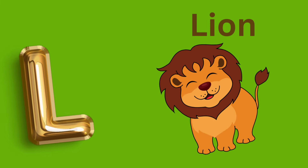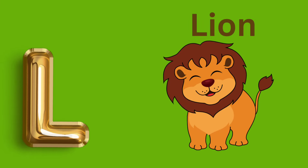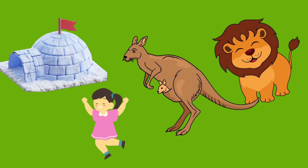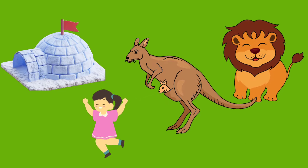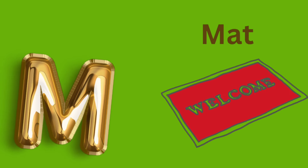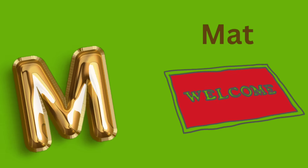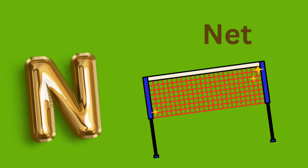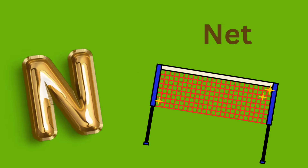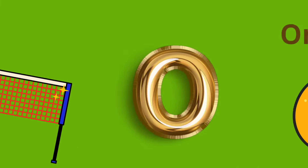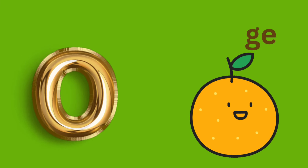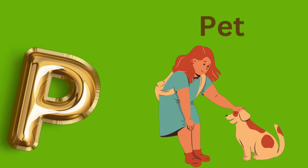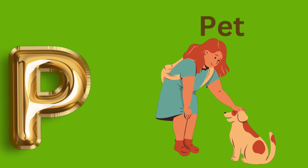L is for Lion. L, L, Lion. M is for Mat. M, M, Mat. N is for Net. N, N, Net. O is for Orange. O, O, Orange. P is for Pet. P, P, Pet.